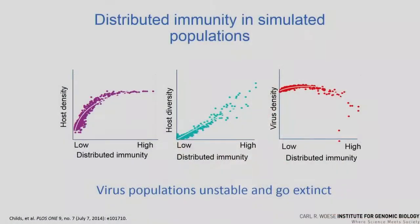We proposed that this distributed immunity was going to allow the host population to diversify and stabilize with respect to the virus population. Because when the virus gets an escape mutation, it can only infect a subset of the population — those whose protospacer has been mutated to no longer match the spacer. We ran this through simulations and found that when distributed immunity evolved in the host population, host density increased, host diversity increased, and virus density decreased to the point where viruses sometimes went extinct. The virus now has a very small susceptible population, because very few individuals in the population are going to be matched.